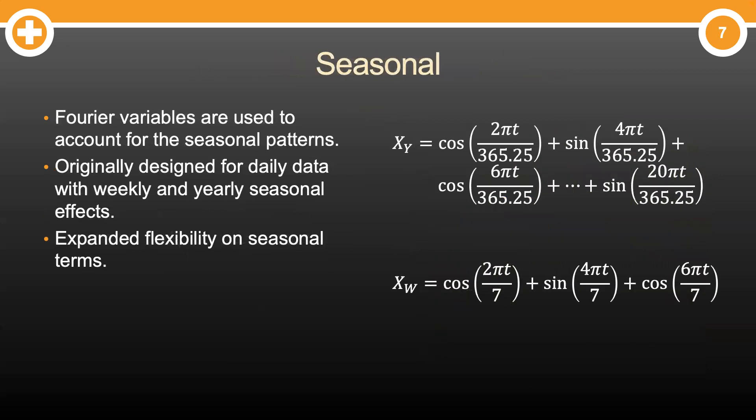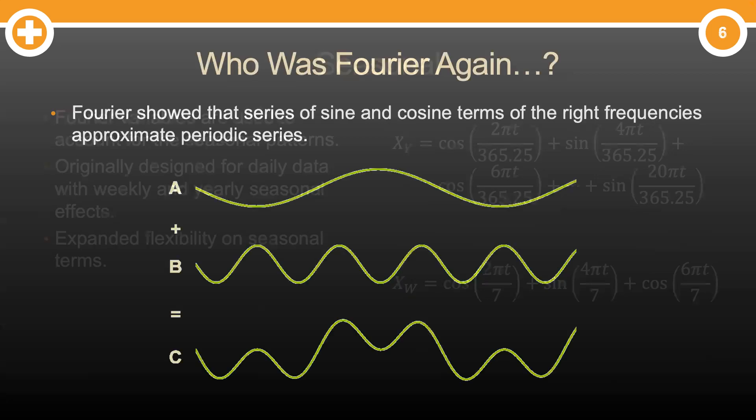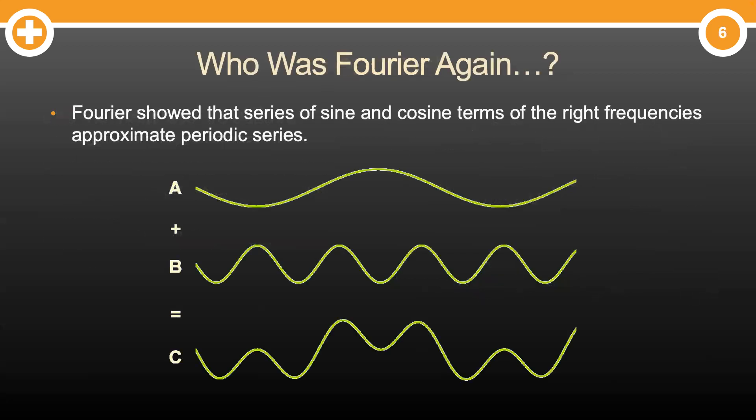The next component is the seasonal component. This component uses Fourier variables — variables created from Fourier transforms. Quick tangent: Joseph Fourier was a French mathematician who investigated Fourier series, which were later developed into Fourier analysis. This led to harmonic analysis, which studies sine and cosine waves of different frequencies.